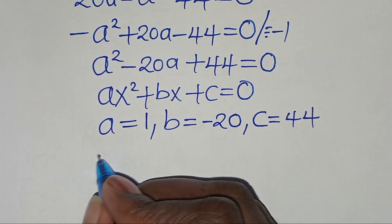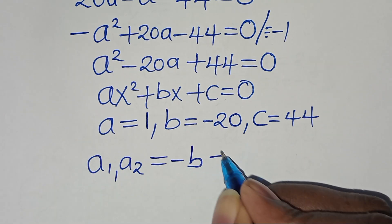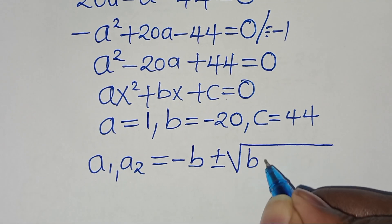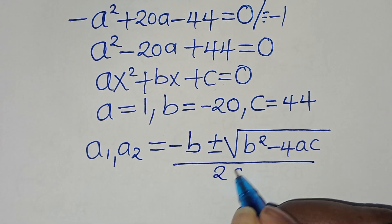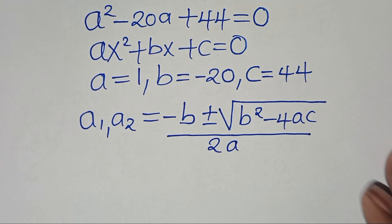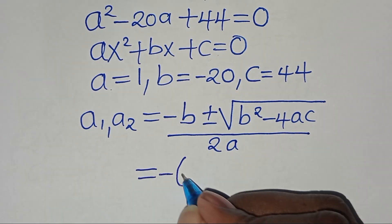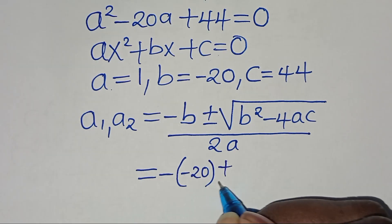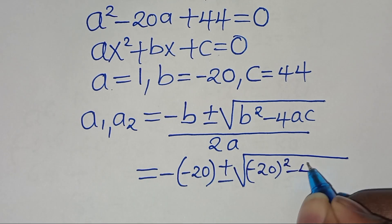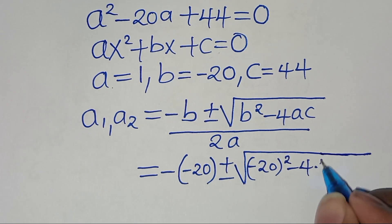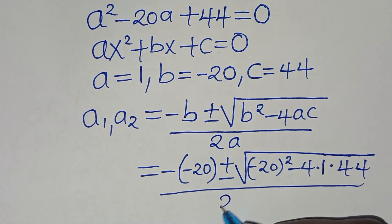Now let's solve for A1 and A2 by applying the quadratic formula: minus B, plus or minus the square root of B squared minus 4AC, everything divided by 2 times A. Let's substitute for A, B, and C: we have minus (minus 20), plus or minus the square root of (minus 20) squared minus 4 times 1 times 44, everything divided by 2 times 1.